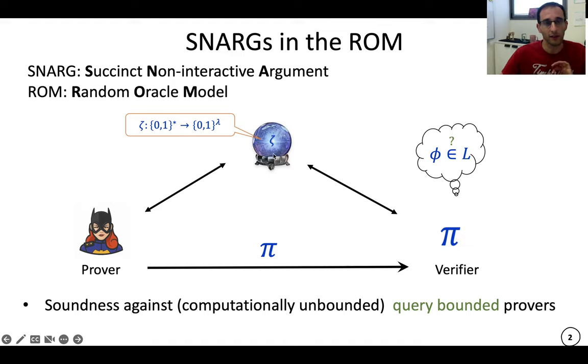This is a totally random function that outputs λ bits. And the security we have in this model is security against query bounded provers that even might be computationally unbounded.